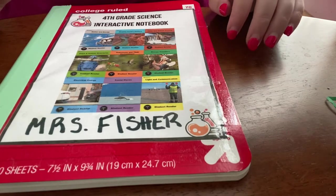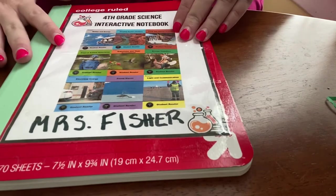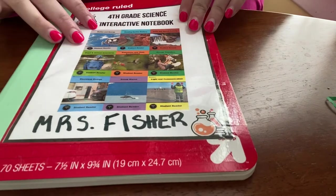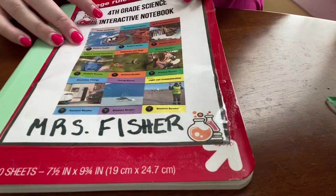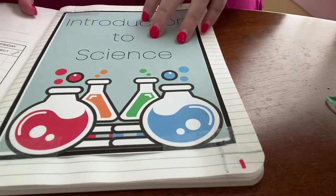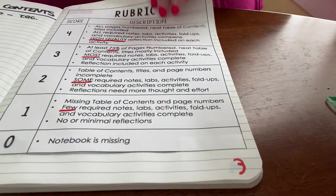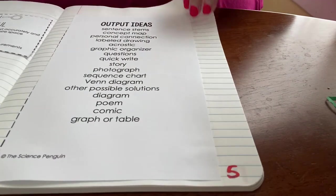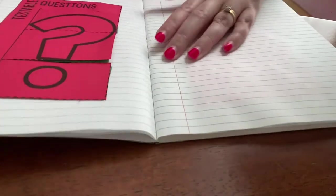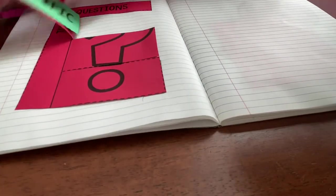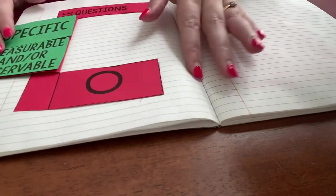Hi there. Today we are going to be working in the testable question foldable. You already have a video showing you how to create the foldable and how to put it into your notebook, but now we're going to open up to page six where that foldable is. We're going to actually fill out the pieces inside.